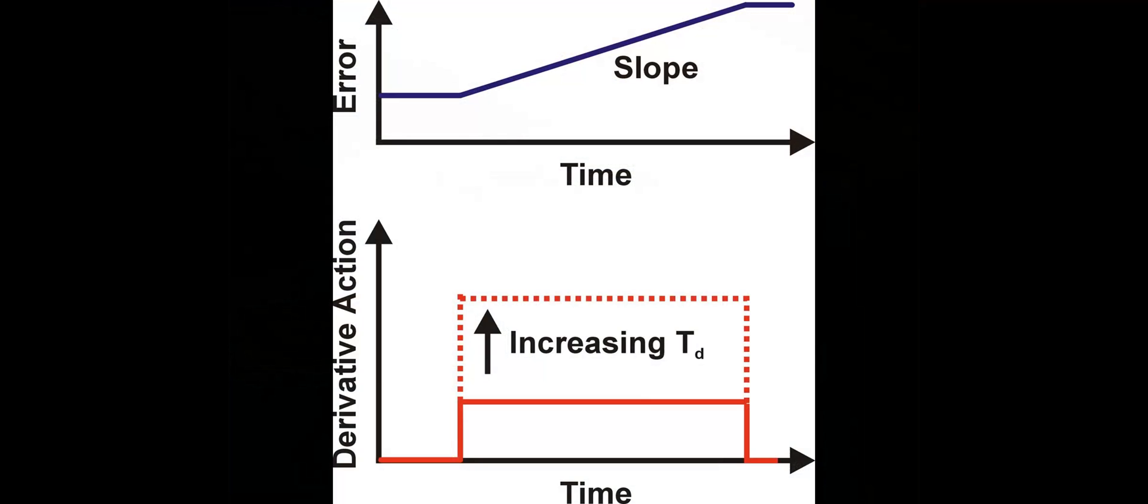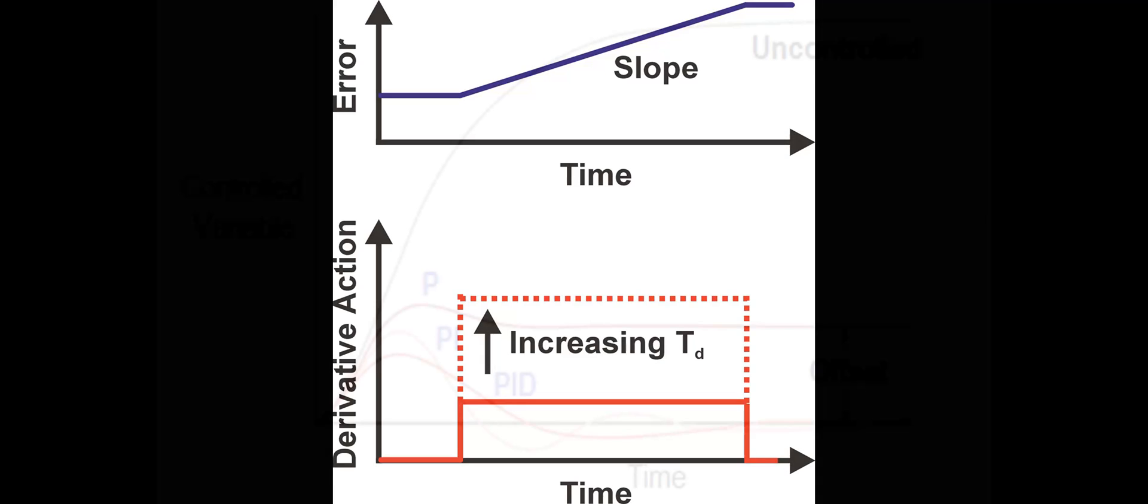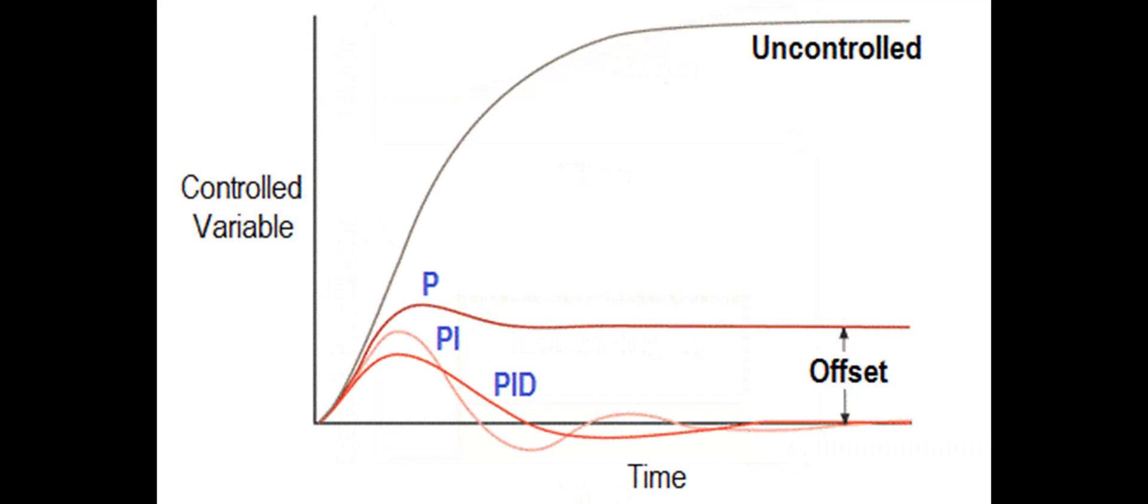However, it is possible to have too much of a good thing, and if the derivative gain is set too high it can in some circumstances cause a system to become unstable.